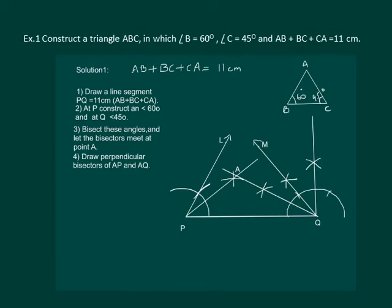Now construct perpendicular bisectors of AP and AQ. DE is the perpendicular bisector of AP and FG is the perpendicular bisector of AQ.